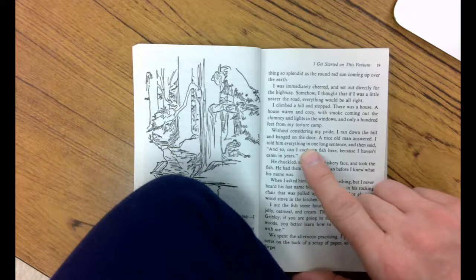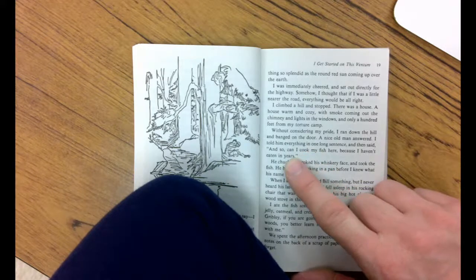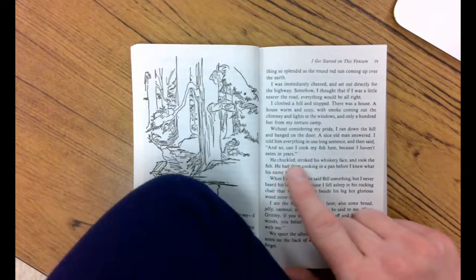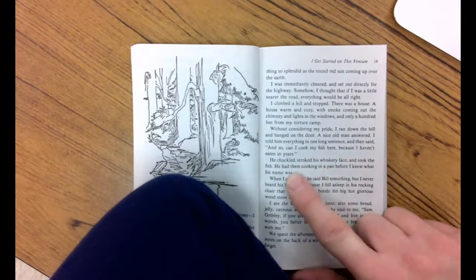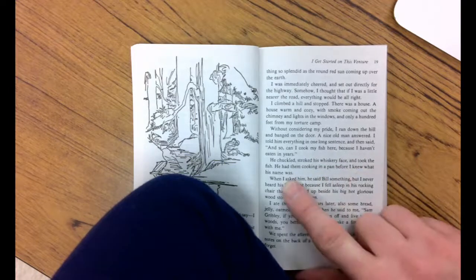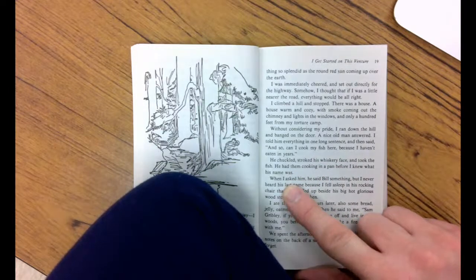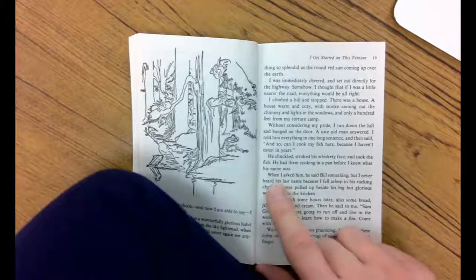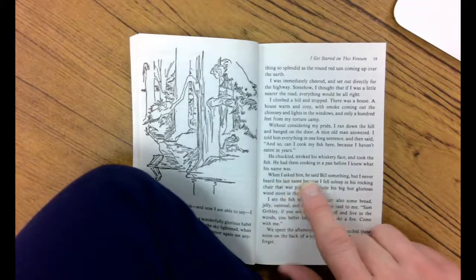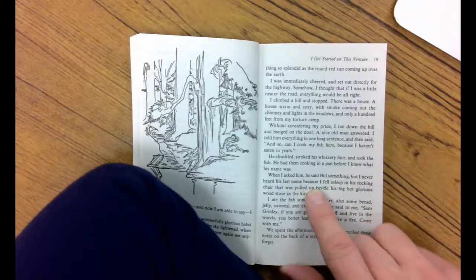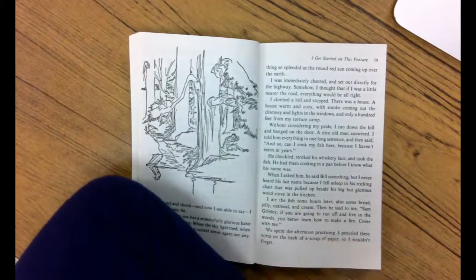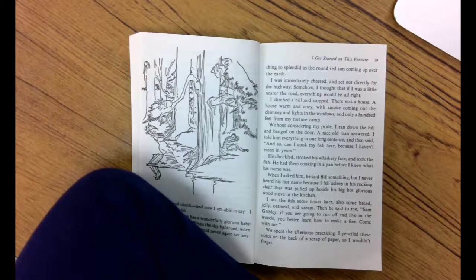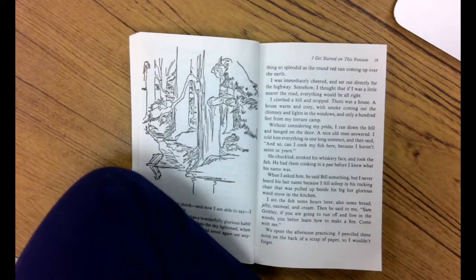A nice old man answered. I told him everything in one long sentence and then said, and so, can I cook my fish here because I haven't eaten in years? He chuckled, stroked his wrinkly face, and took the fish. He had them cooking in a pan before I knew what his name was. That's pretty nice. Remember, people out in the country like this in the wilderness sometimes are very, very nice. When I asked him, he said Bill something, but I never heard his last name because I fell asleep in his rocking chair that was pulled up beside a big, hot, glorious wood stove in the kitchen. I ate the fish some hours later, also some bread, jelly, oatmeal, and cream.